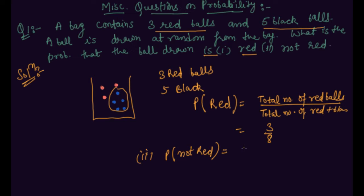You can solve this question by complementary method also. What are complementary events? You can solve this by 1 minus probability of red also. So this is 1 minus 3 by 8 which is 5 by 8.